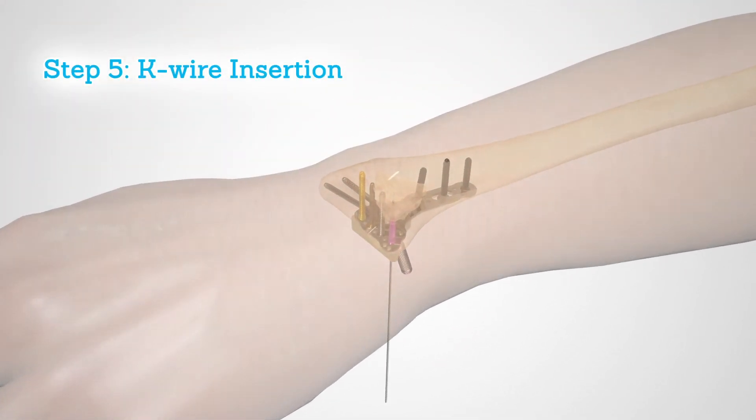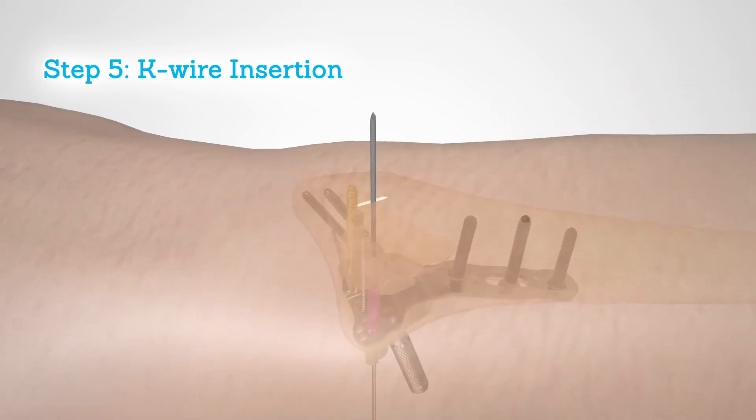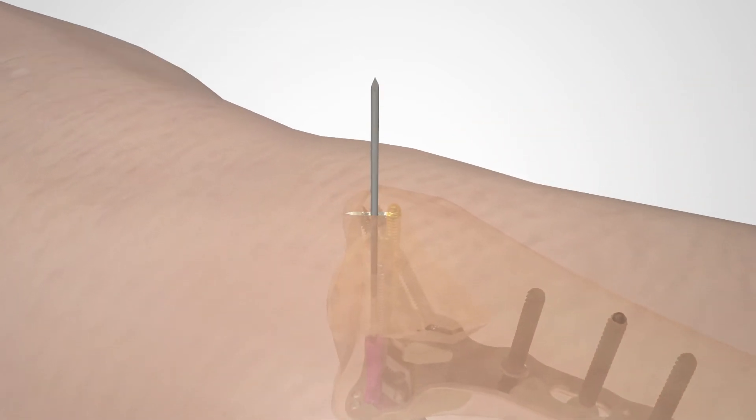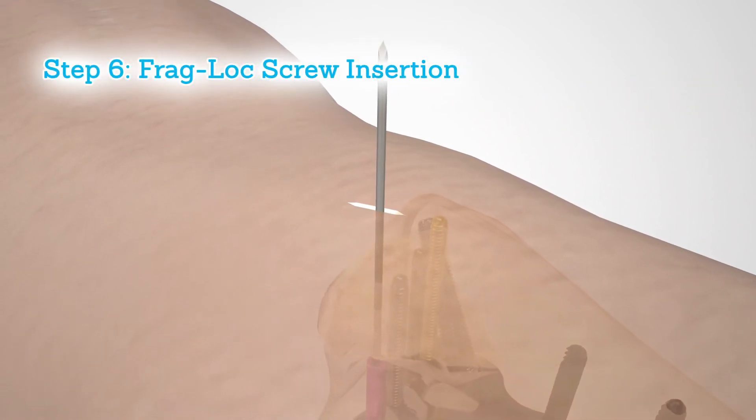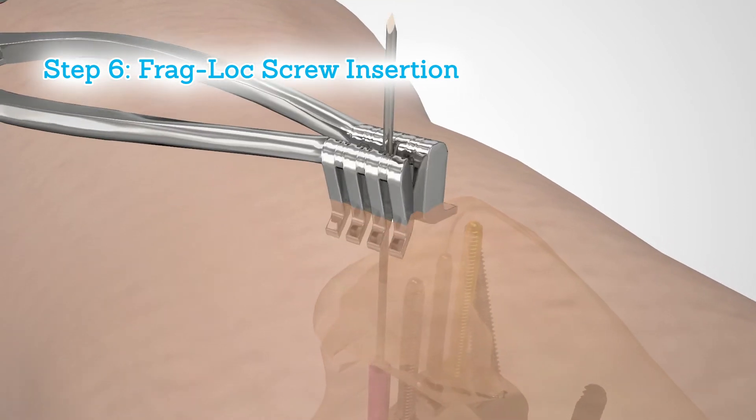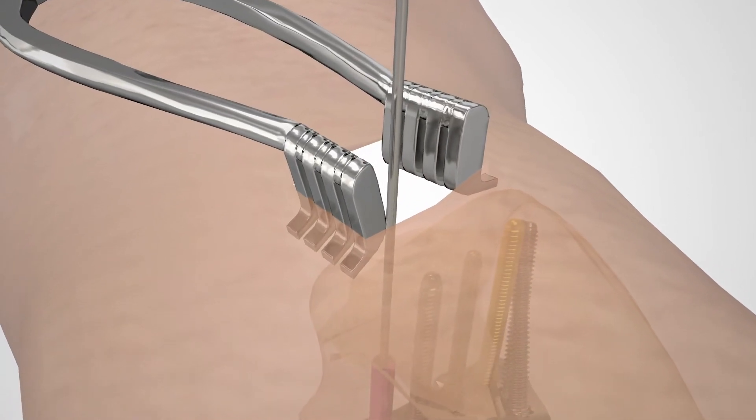Insert a K wire through the compression sleeve, passing it to the dorsal side of the radius. After making a small incision dorsally, a Heiss retractor is used to maintain soft tissue clearance.